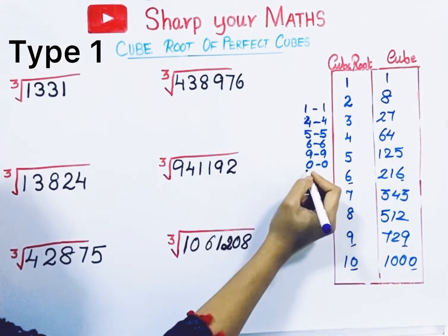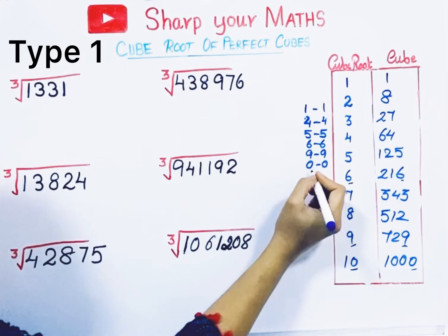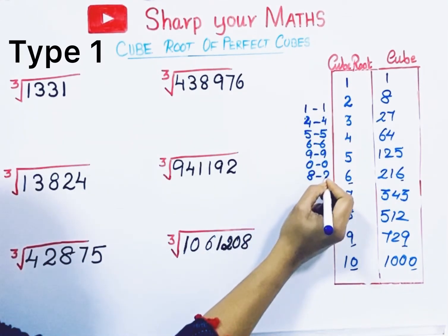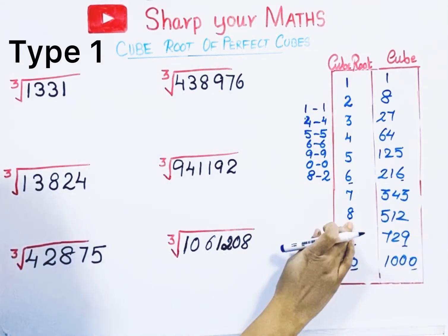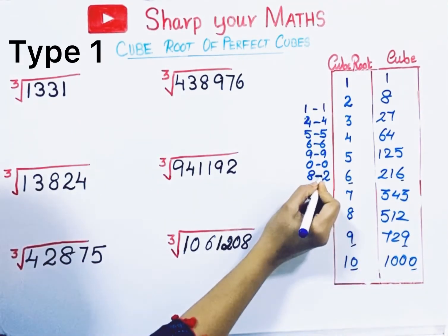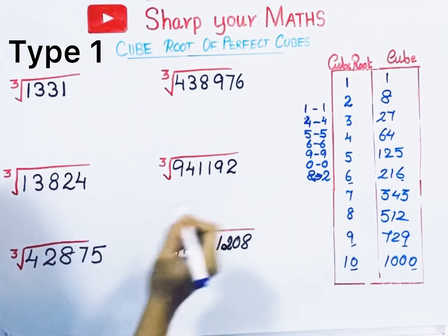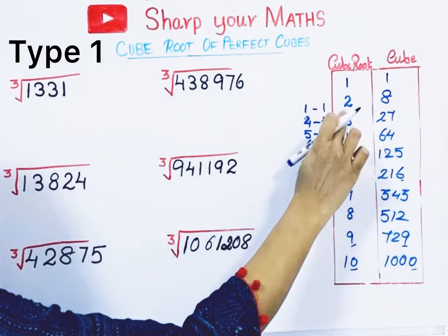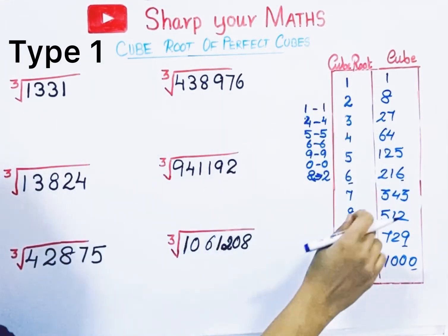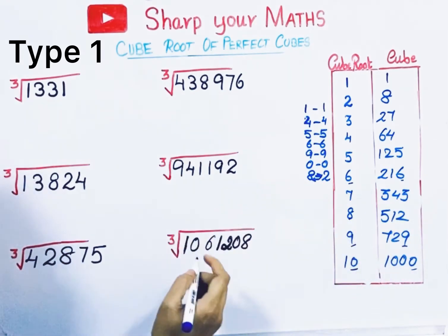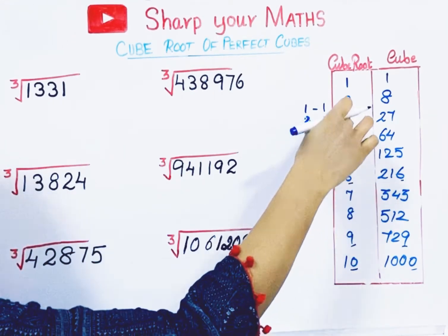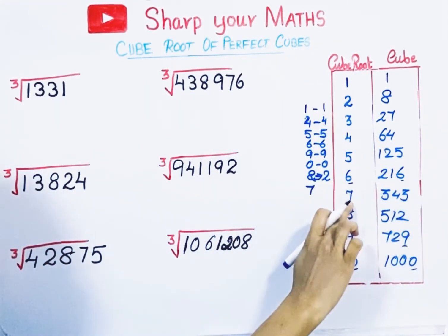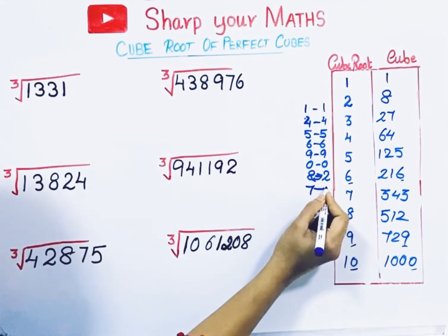For the remaining digits, if the cube ends with 8, then its cube root ends with 2. And if the cube ends with 2, its cube root ends with 8 — so 2 and 8 are opposite. Similarly, if the cube ends with 7, cube root ends with 3. And if the cube ends with 3, cube root ends with 7 — so 7 and 3 are opposite.